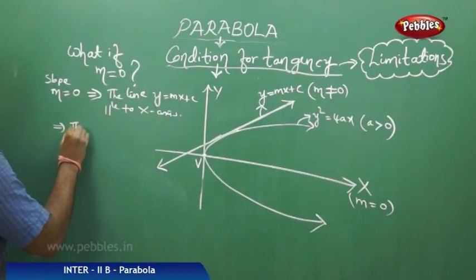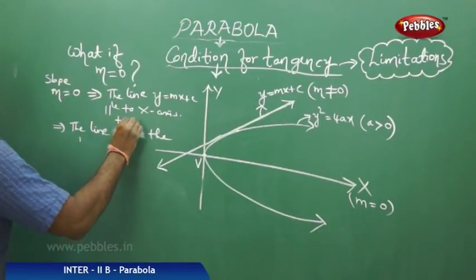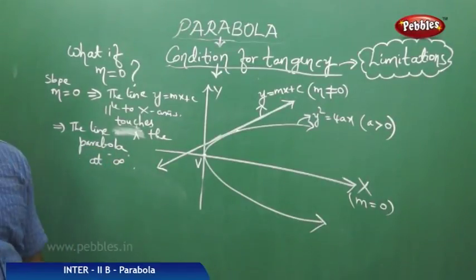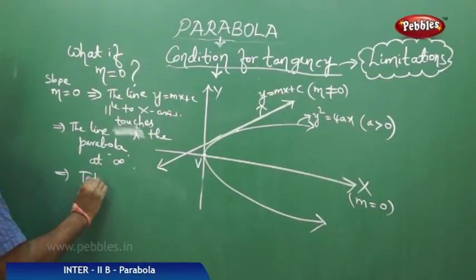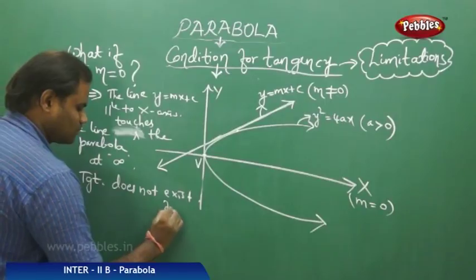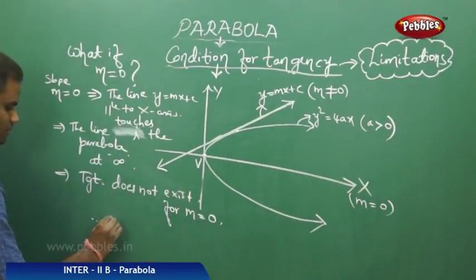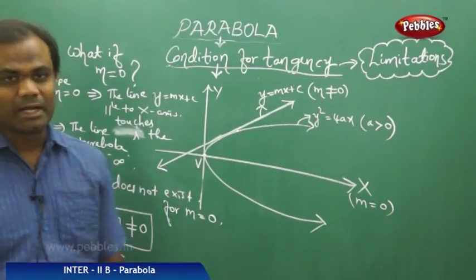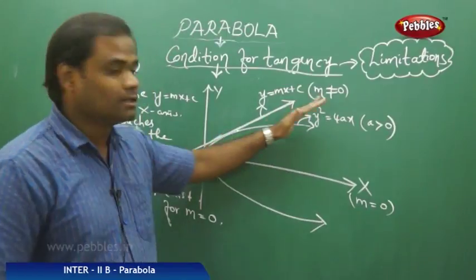That implies the line meets or touches the parabola at infinity, which implies the tangent does not exist for m equal to 0. Therefore, in order that a tangent exists for the parabola, the condition is m is not equal to 0. That is how we understand the condition of tangency restricted with m not equal to 0 — that is, the slope of the line is non-zero.